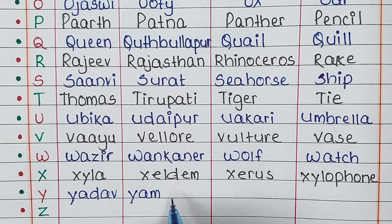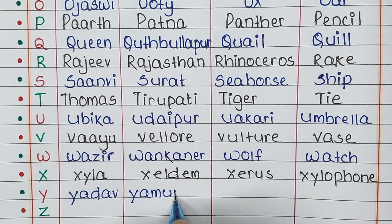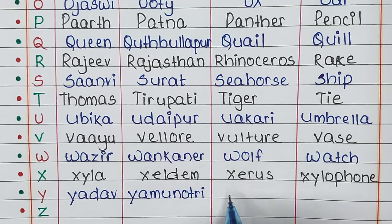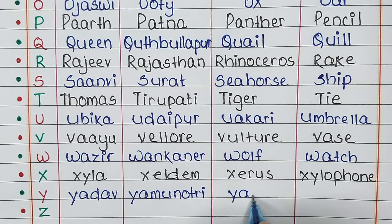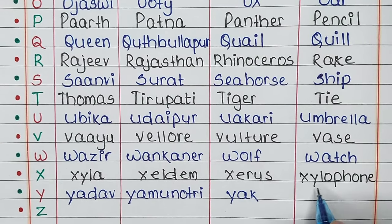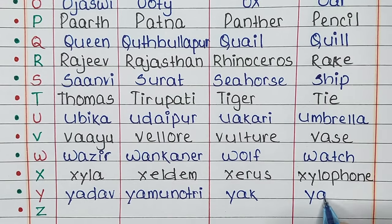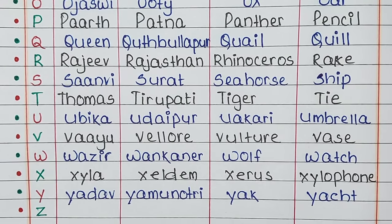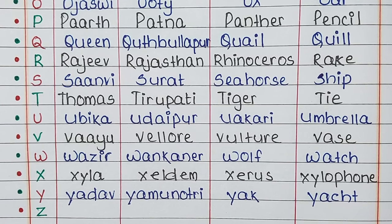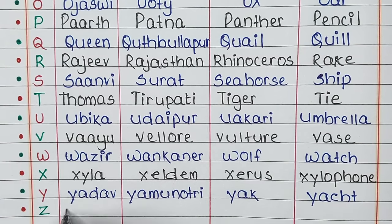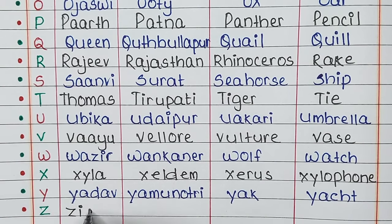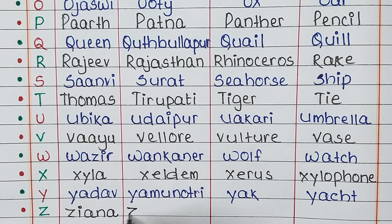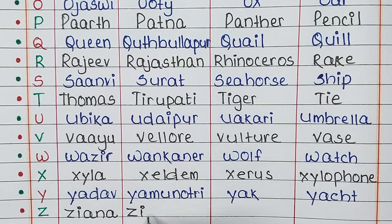Next is letter Y. The name is Yadav, the place is Yamunotri, the animal is Yak, and the thing is Yacht.